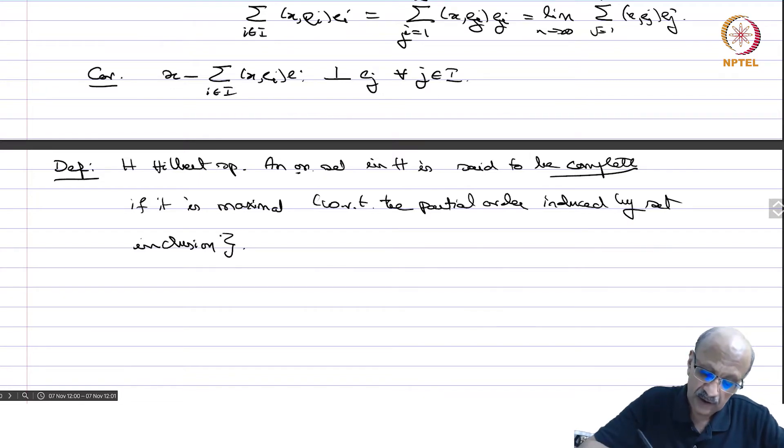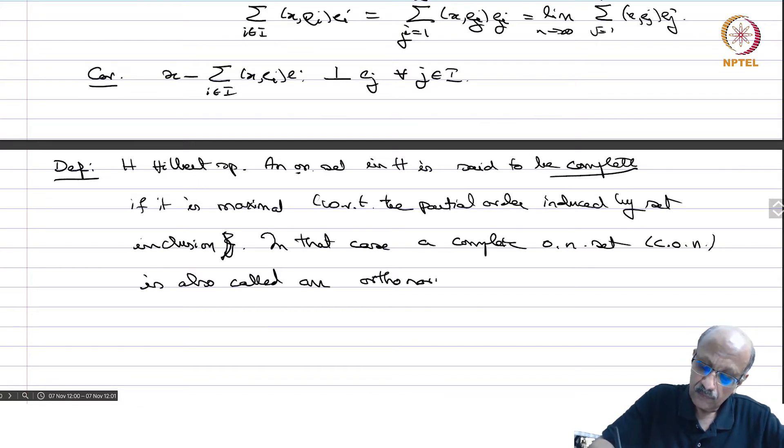That means there is no other orthonormal set which contains this one and strictly bigger than this. So that is the meaning of saying it is maximal. In that case, a complete orthonormal set, sometimes we write CON is also called an orthonormal basis. It is another name for a complete orthonormal set.